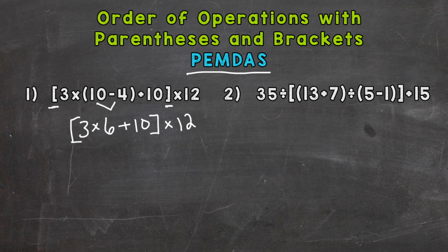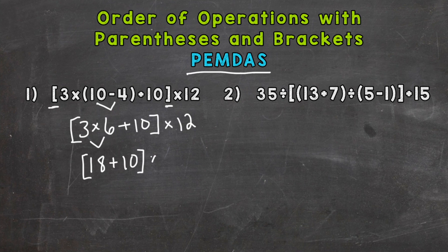We're just going to break this problem down one step at a time. So next, within the brackets, we have 3 times 6 plus 10. Any more parentheses? No. Any exponents? No. Any multiplication or division? Yes, so that's what we're going to do next. 3 times 6 is 18. Bring down everything we did not use, including the brackets again.